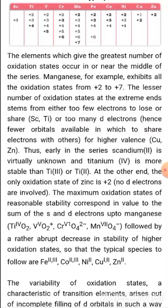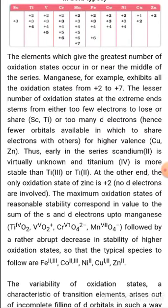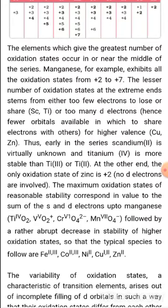The maximum oxidation states of reasonable stability correspond to the sum of s and d electrons, which is why chromium and manganese show maximum oxidation states of +6 and +7 respectively. After manganese, there is a rather abrupt decrease in the stability of higher oxidation states. The typical stable species are: Fe²⁺/Fe³⁺, Co²⁺/Co³⁺, Ni²⁺, Cu⁺/Cu²⁺, and Zn²⁺.